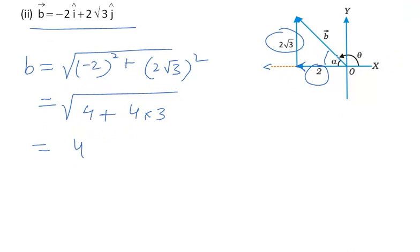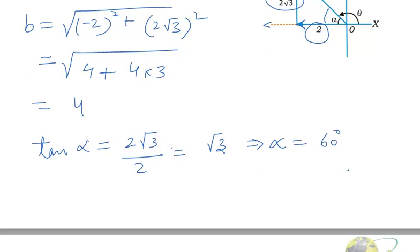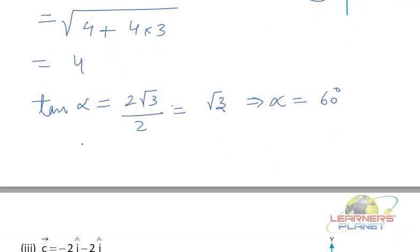And let's say this angle is alpha which the vector b makes with the minus x axis, then tan alpha will be given by 2 root 3 by 2, which is root 3, which implies that alpha is equal to 60 degrees. Now if this angle is 60 degrees, then this angle theta is 120 degrees.